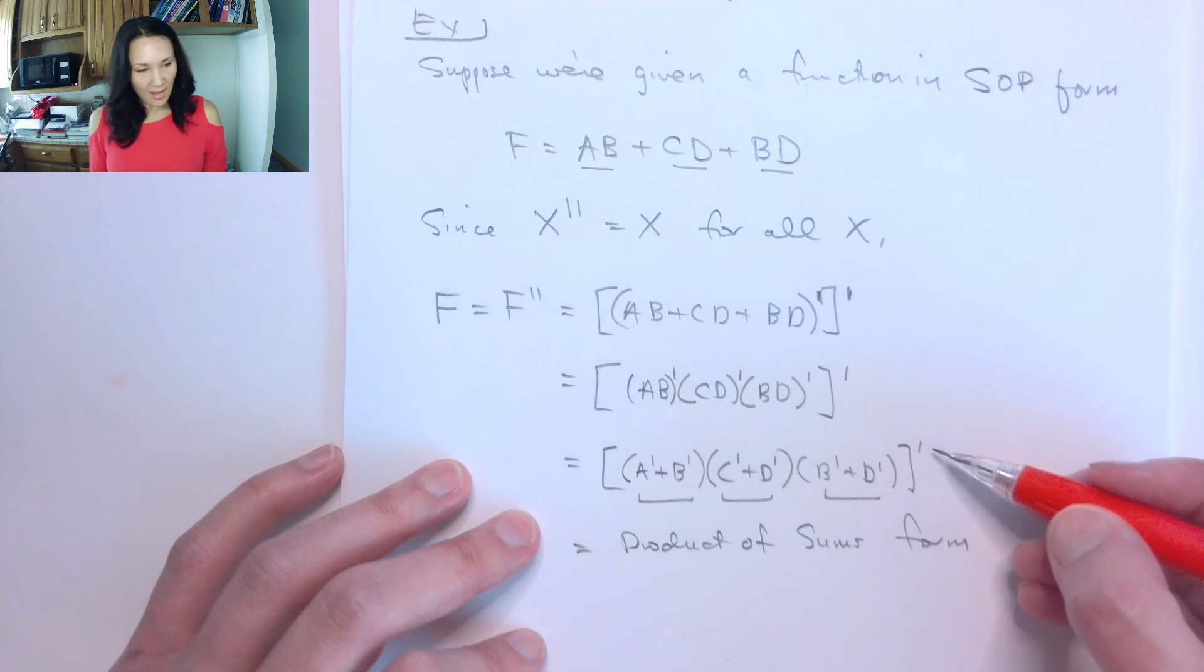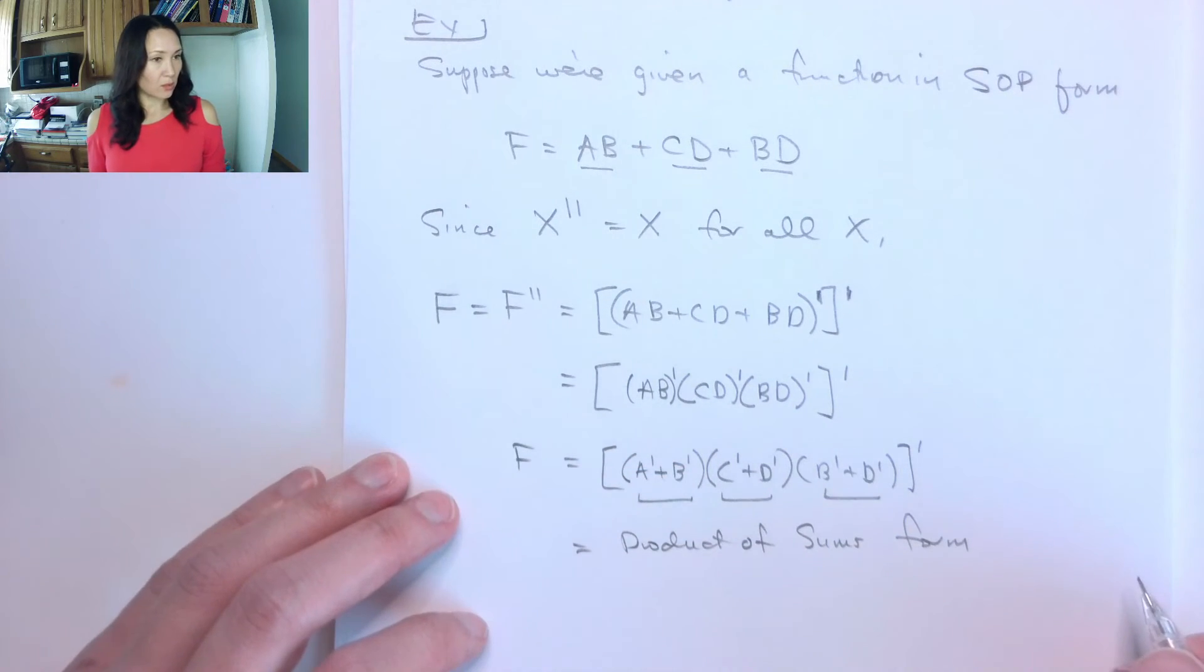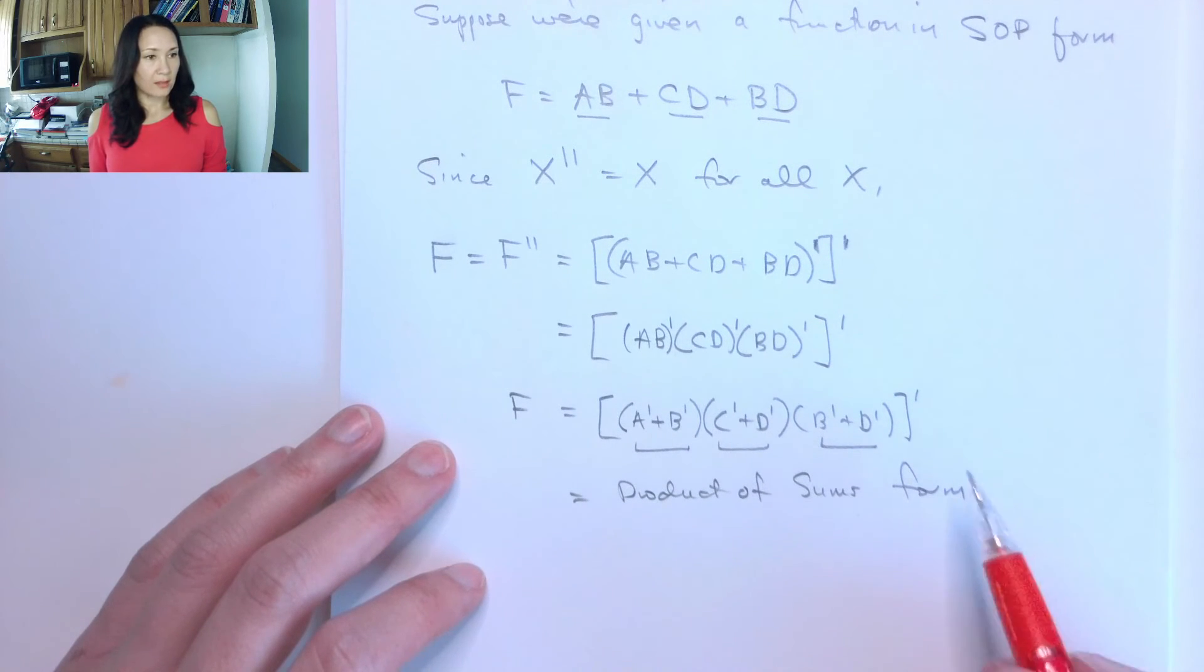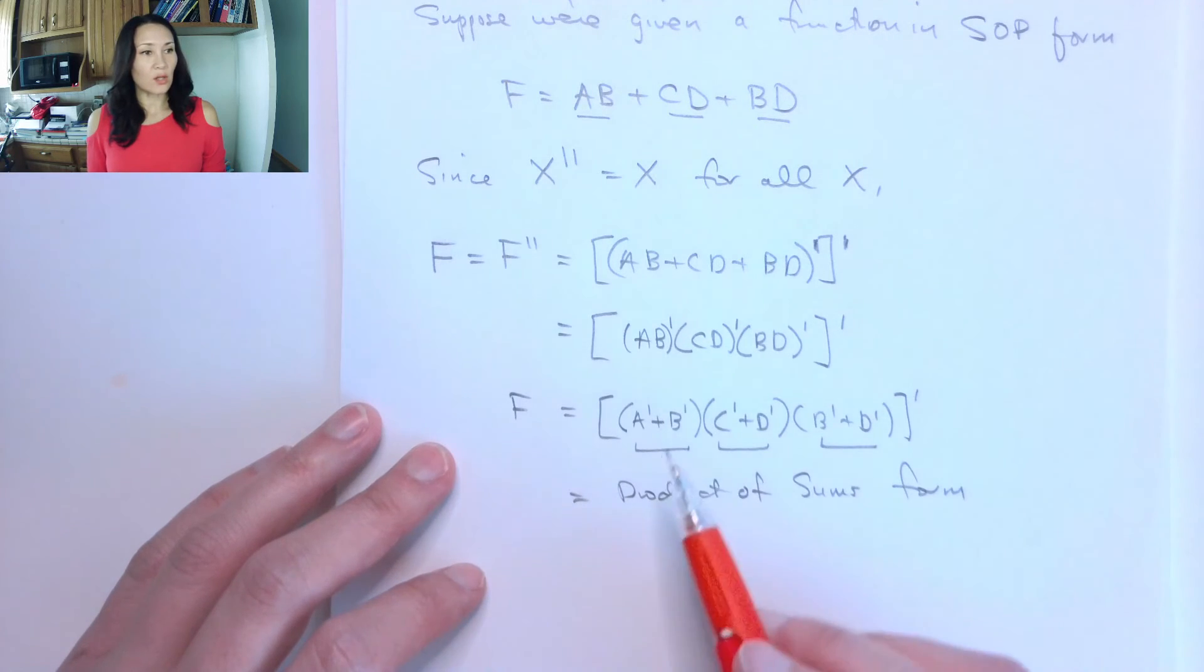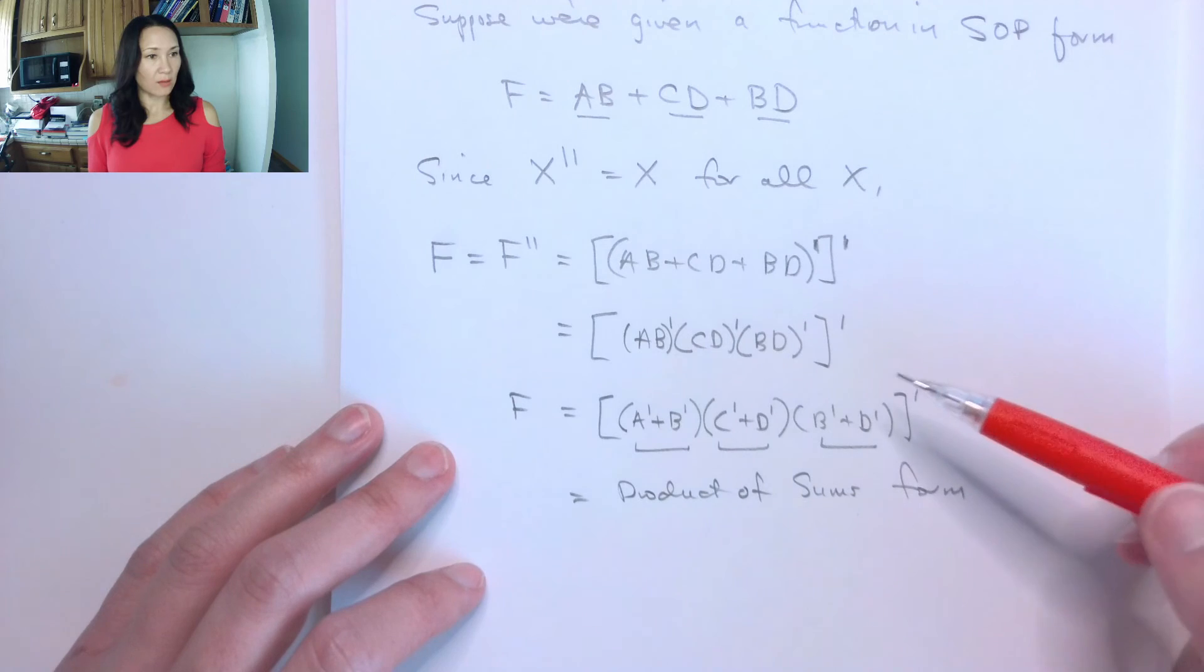Now we still have this outer complement. So this is technically equal to F complement. Sometimes it works out that depending on what your design constraints are, it can be easier to create the circuit for the complemented function and then just stick an inverter on the end. So it's helpful to be able to go back and forth between F and F's complement.